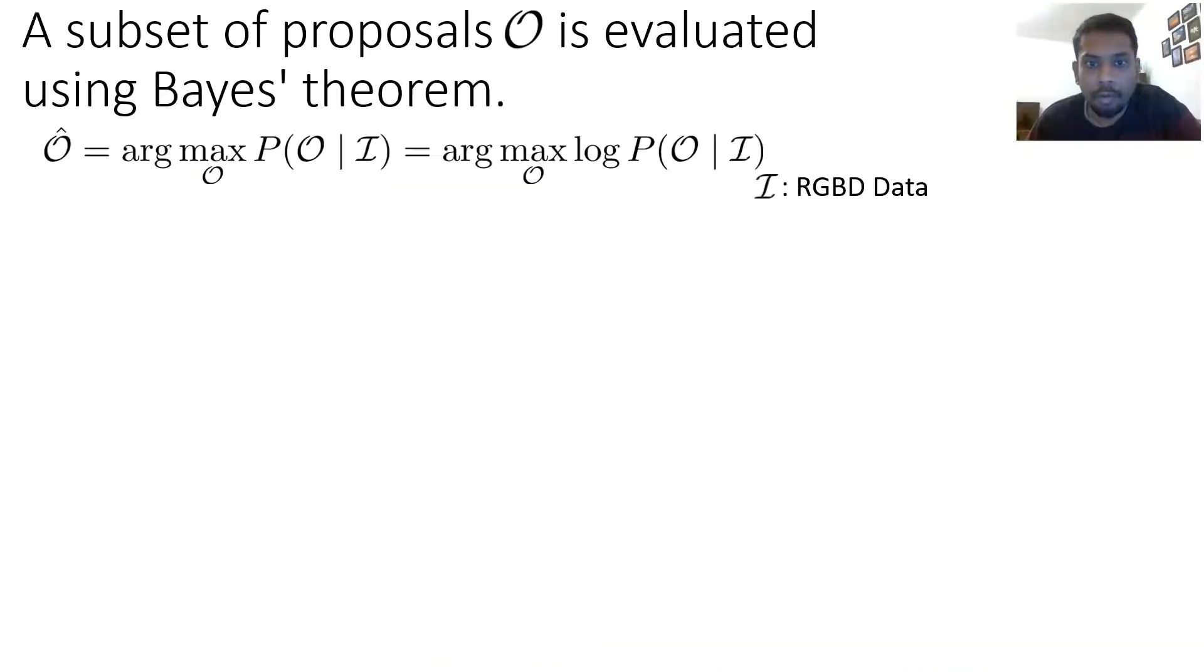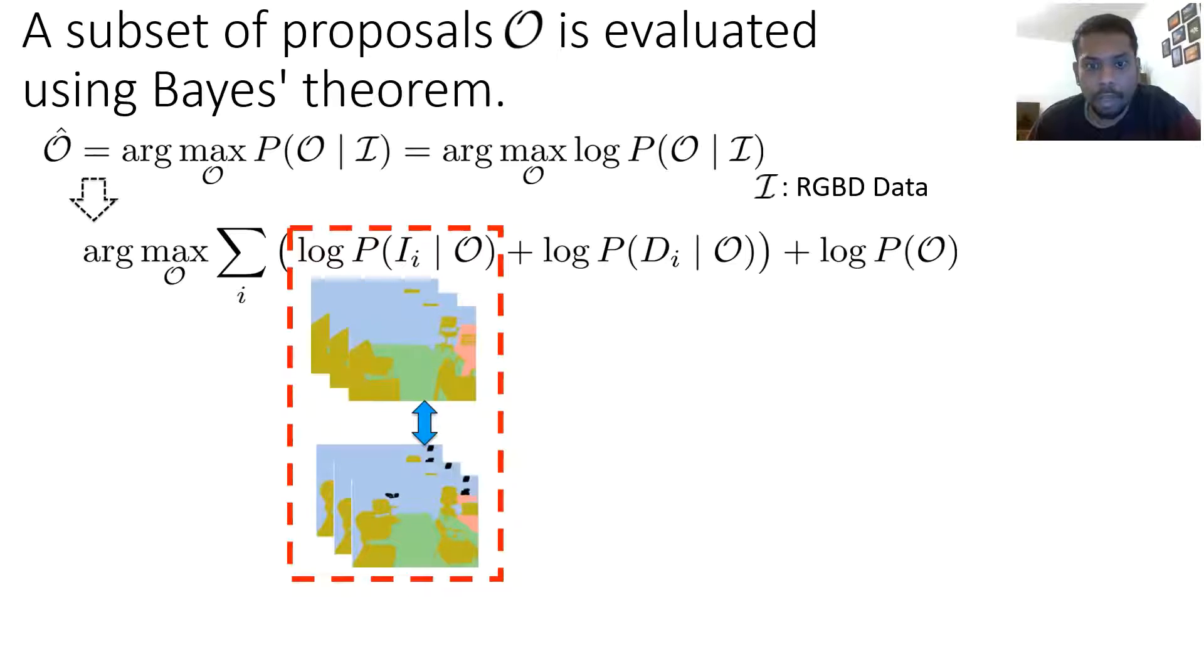We evaluate the selected proposals using Bayesian formulation of the problem that maximizes the posterior probability of choosing the subset of proposals. This can be viewed as maximizing the sum of log likelihood and prior terms. The log likelihood is further split into two terms corresponding to the color term and the depth term.